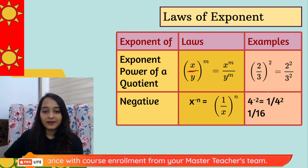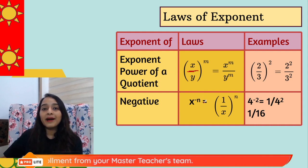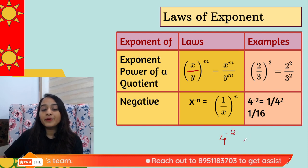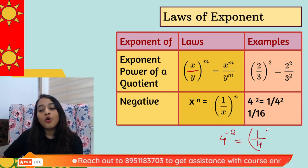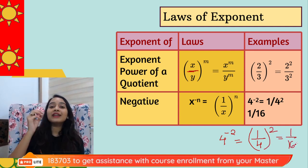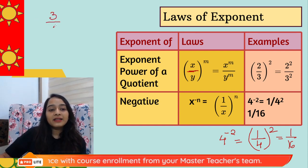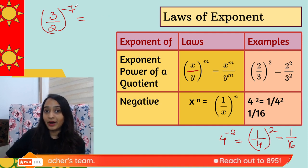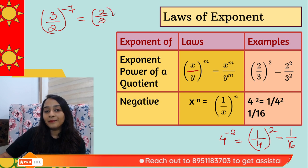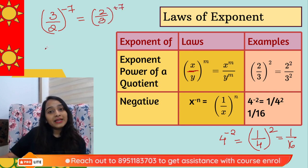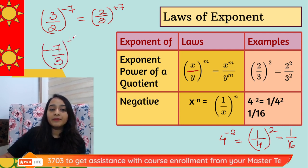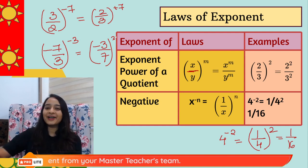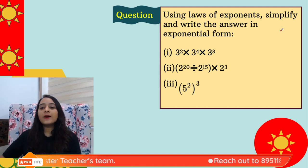Negative exponents: x^(−n) = 1/x^n. For example, 4^(−2) = 1/4² = 1/16. When you have a negative exponent, reciprocate the base and make the power positive. For (3/2)^(−7), reciprocate the base to get (2/3)^7. If the base is negative, e.g., (−7/3)^(−2), reciprocate to get (−3/7)².